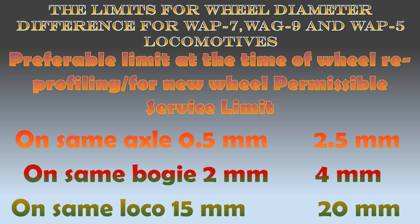In this chart, the limits of the wheel diameter difference for WAP7, WAG9 and WAP5 locomotives are shown. On the same axle, the maximum permissible difference is 0.5 mm and if it is 2.5 mm or more, it is worn out. On the same bogie, permissible is 2 mm and the worn out limit is 4 mm, while on the same locomotive, the new limit is 15 mm and the worn out limit is 20 mm.